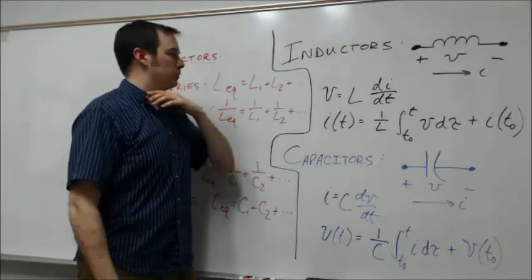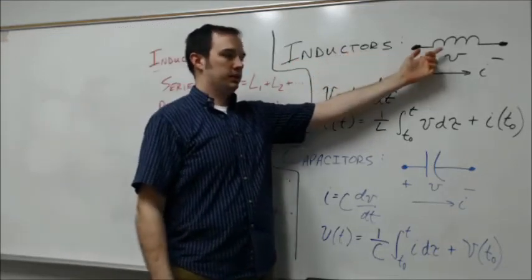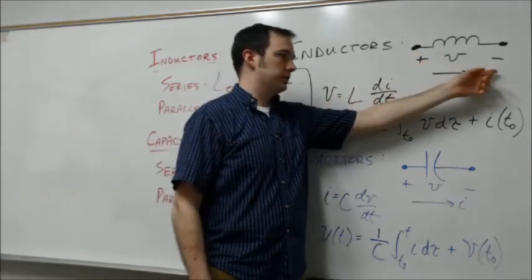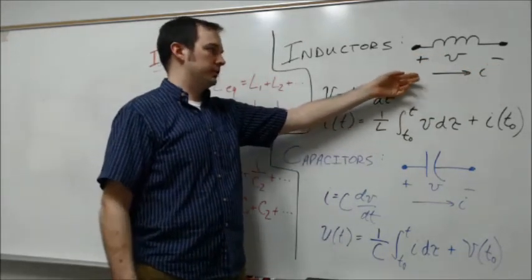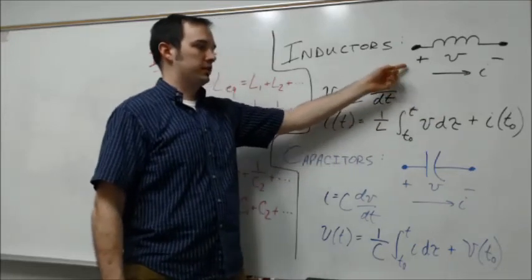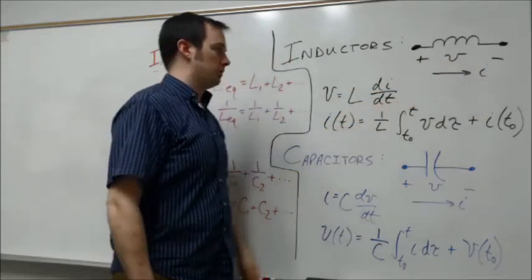So again, first inductors here got a standard symbol shown here. And again, we want to follow the standard passive sign convention that's explained in the book, where the current that's traveling through the inductor is defined as going from the positive to the minus side of whatever the voltage across that given inductor is.